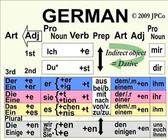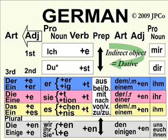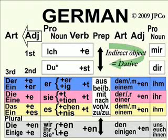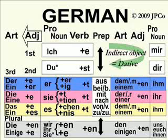Here's the dative, the indirect object — that's the secondary thing, so to speak. It's marked by the words aus, bei, mit, nach, von, zu. A couple of them can be contracted: bei becomes beim if you have an M ending, and zu can become zum or zur if you have a contraction with M or R. The adjective endings are always EN. The pronouns in the dative become mir, dir, ihm, ihr, ihm — notice the repetition — uns, euch, ihnen — us, them, or you formal.